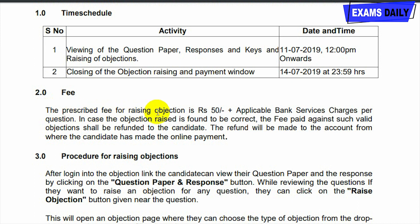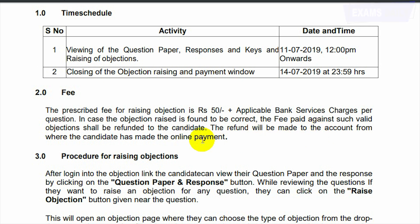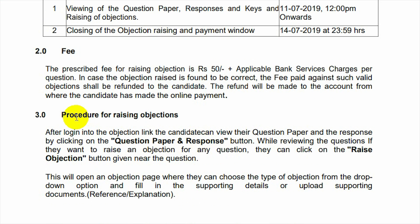The prescribed fee for raising an objection is ₹50 plus applicable bank service charges per question. In case your objection is found to be correct, the fee paid by you will be refunded by the RRB. The refund will be made to the account on which you had made the online payment.